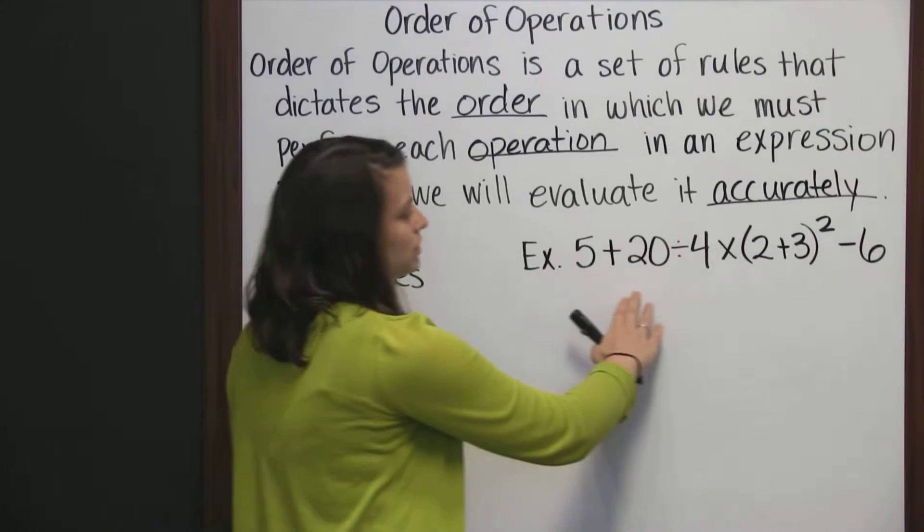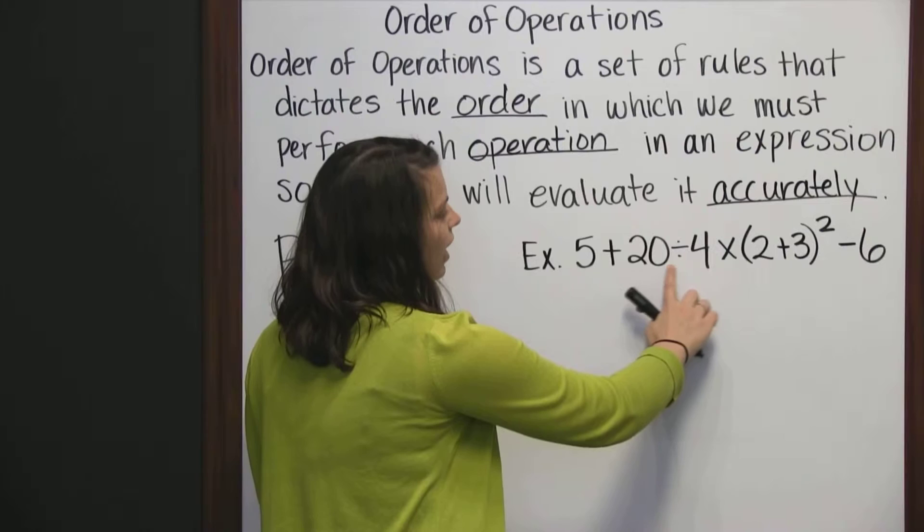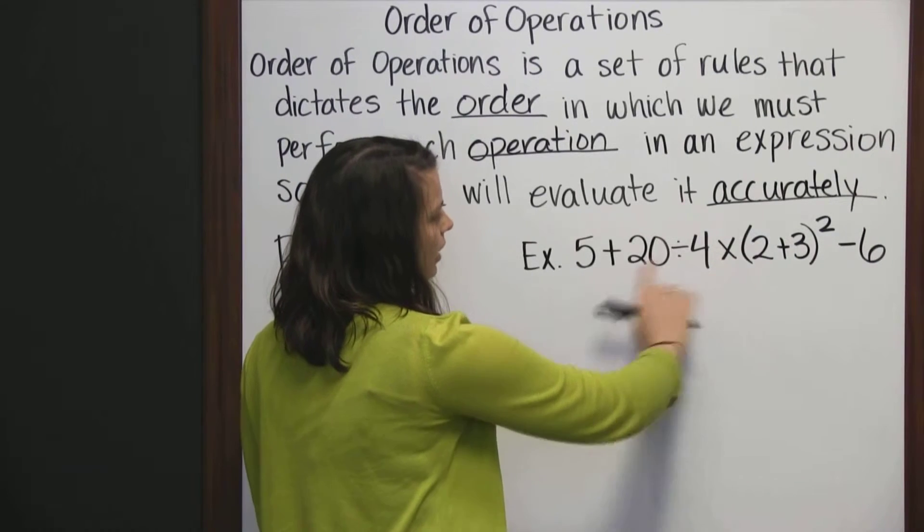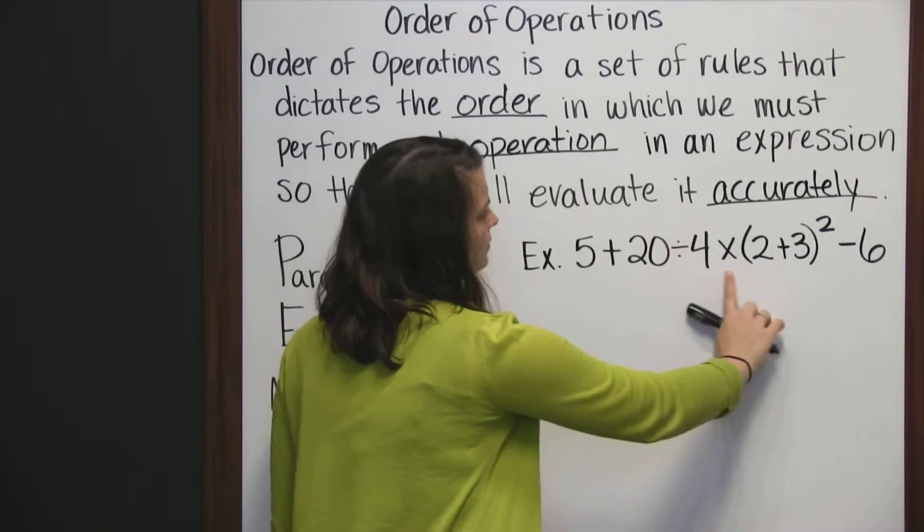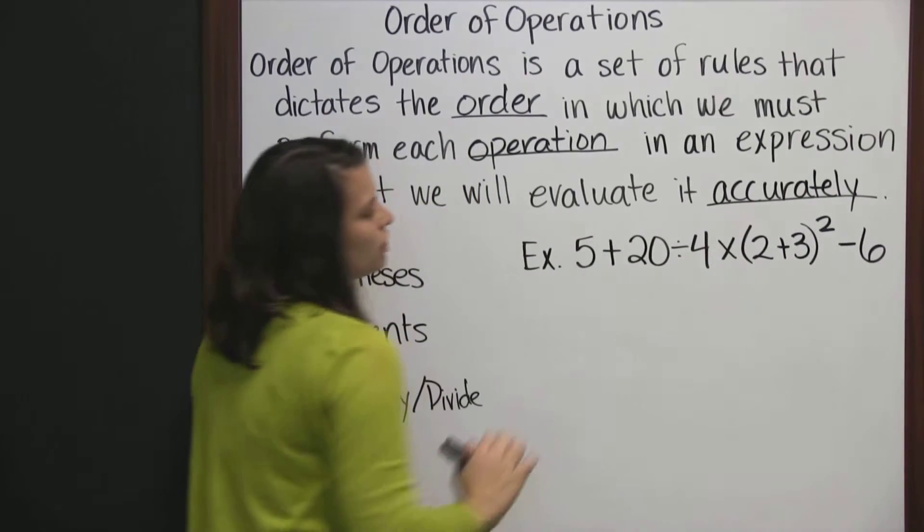So looking at your expression, we would divide first before we would multiply, because when reading from left to right, the division shows up first.